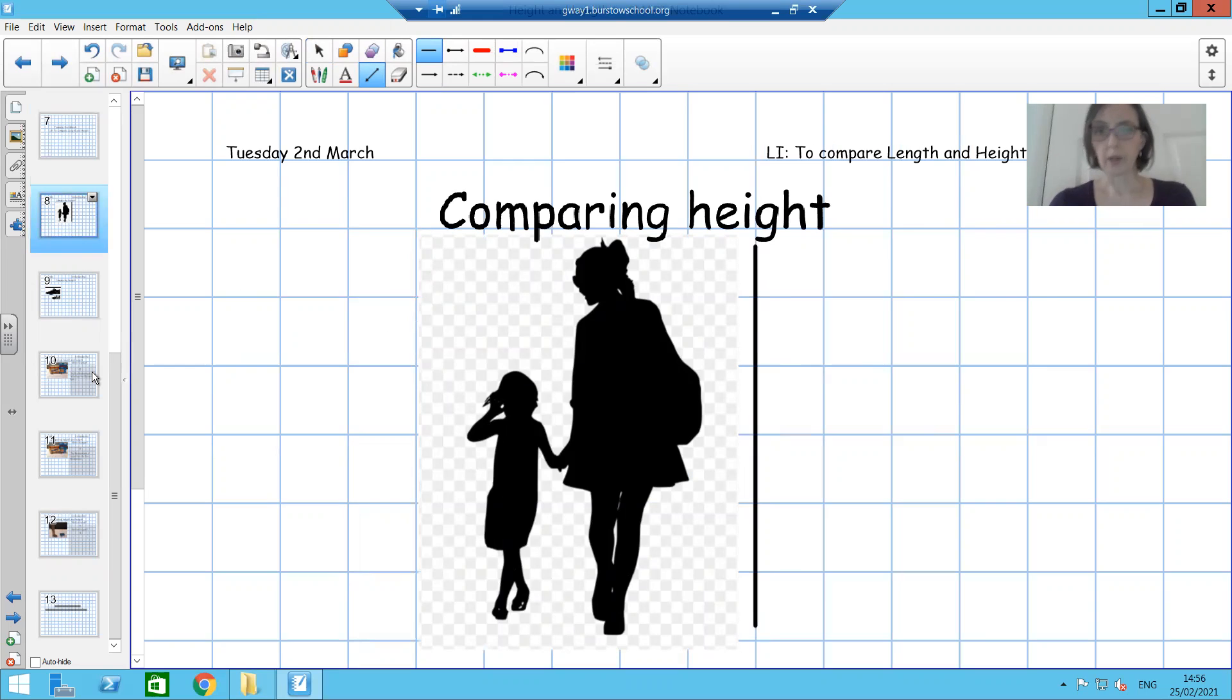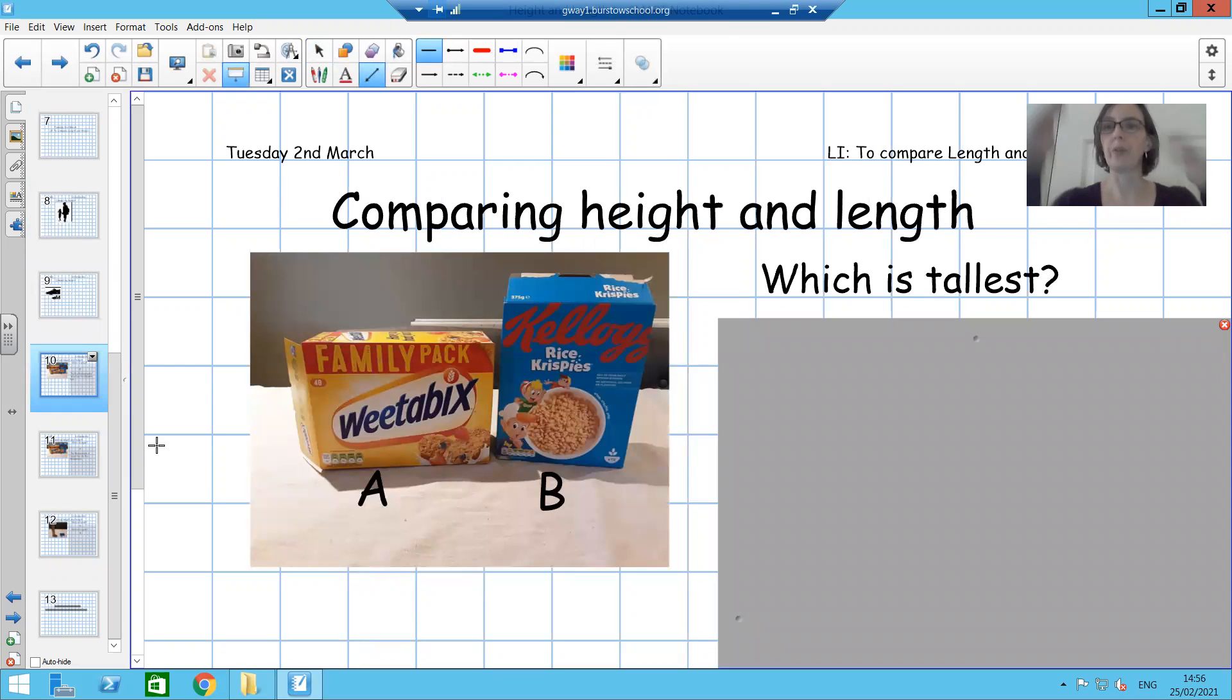Some objects though, we could look at both their height and their length because they're 3D. They go up and they also go across. So look at these cereal boxes here. I've photographed a Weetabix box and a Rice Krispie box next to them. Which one is the tallest? Pause the video. And if you want to challenge yourself, write me out a sentence saying something like, the box is tallest.